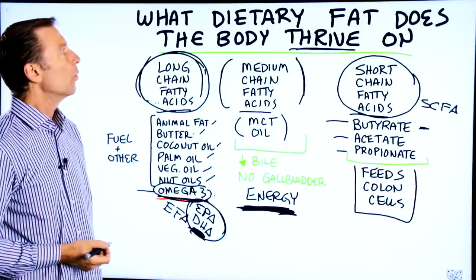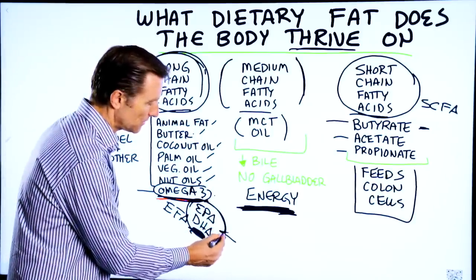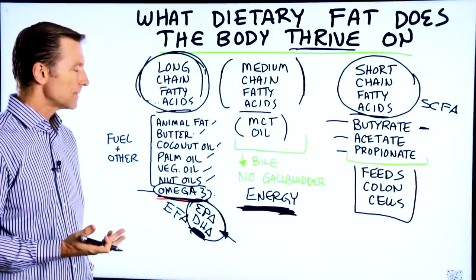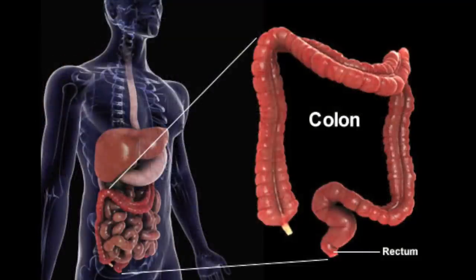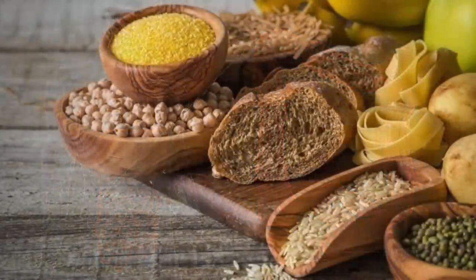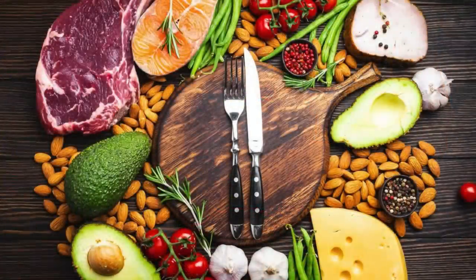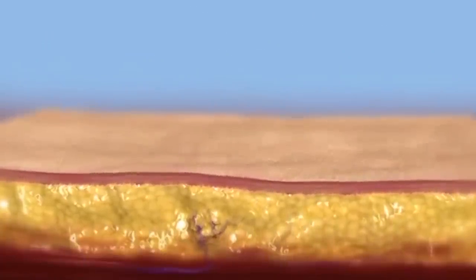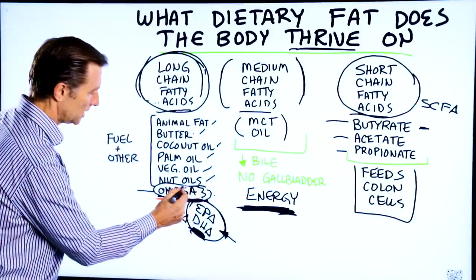So what dietary fat does your body really thrive on? It's omega-3 fatty acids — EPA and DHA — and you get these from fish oils, cod liver oil, salmon, and even algae. The other fats do provide energy and feed your colon, but if you lower your carbs, your body will get its energy from your own body fat. Most people have enough stored fat for that. Out of all the fats we need, omega-3 is the most important.